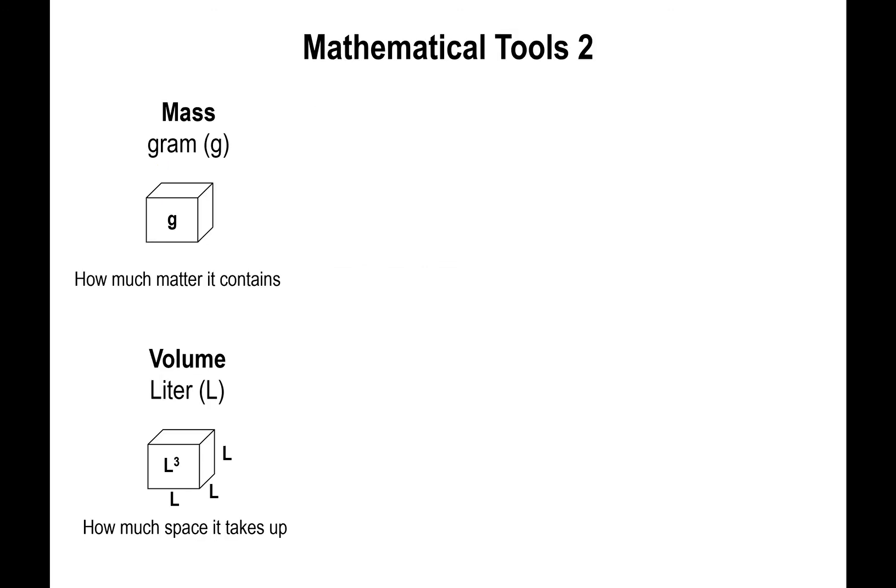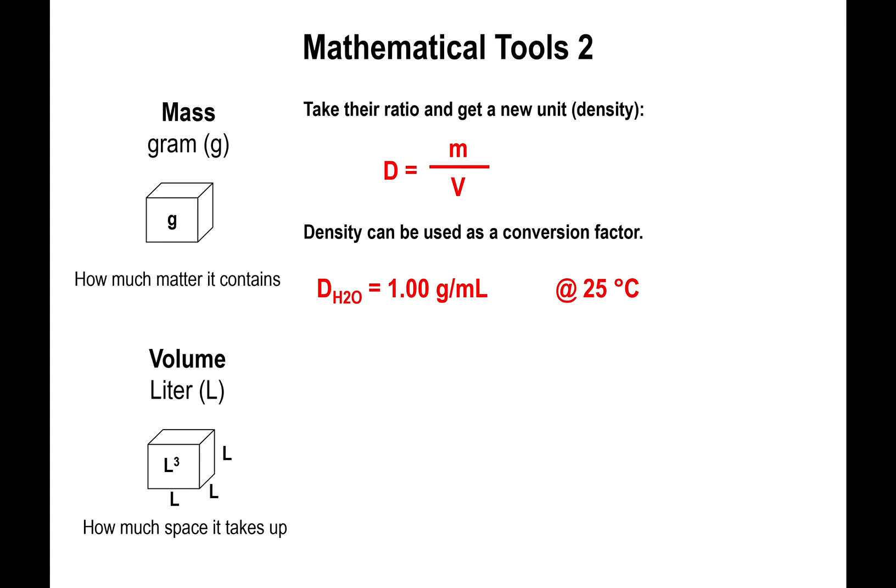All right, the second mathematical tool that I have to talk to you about is called the density. Density is actually a combo of two measurements. On the one hand you measure the mass of an object, and on the other hand you measure the volume of that same exact object. So you basically end up getting the mass and the volume of the same thing, and if you take the ratio of these two things, the ratio of mass and volume is what we call density. Now notice that this is a fraction. Because it is a fraction, it can be used as a conversion factor, specifically a conversion that can allow us to go from mass to volume or from volume to mass. One extra thing to tell you is that the density of water at room temperature I expect you to remember it as being 1.00 gram per mL, so commit that relationship to memory.